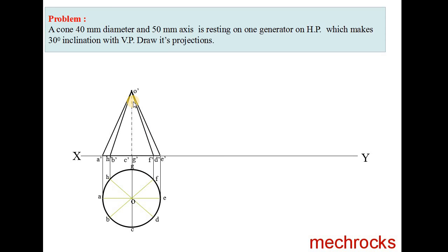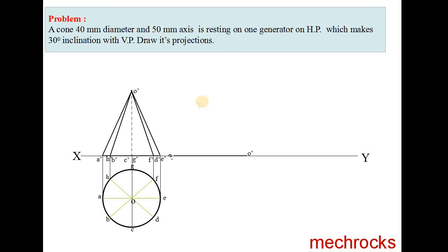Rotate the whole front view to the X'Y' line. First, place O' on the X'Y' line. The length O'E' here should be the same length as the original O'E'. This O'E' length is equal to this O'E'. Now take O'A' as radius and O' as center to draw an arc. Similarly, take A'E' as radius and E' as center to draw another arc. Where these arcs intersect, name it as A'.